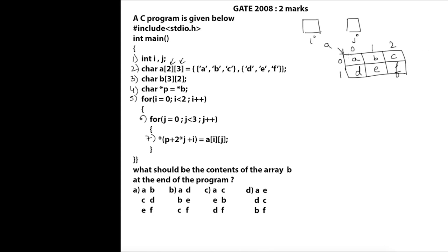Let's suppose the base address of array A is 1000. Since it is a character array, each element takes 1 byte. So the addresses are: location 0,0 = 1000; 0,1 = 1001; 0,2 = 1002; 1,0 = 1003; 1,1 = 1004; and 1,2 = 1005.